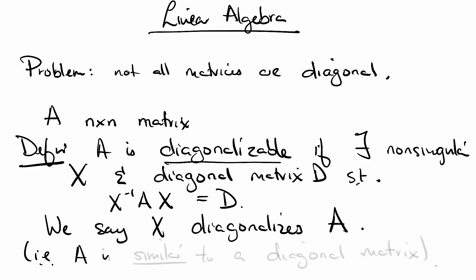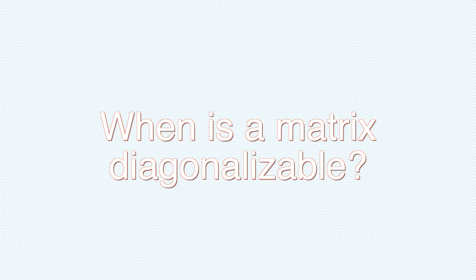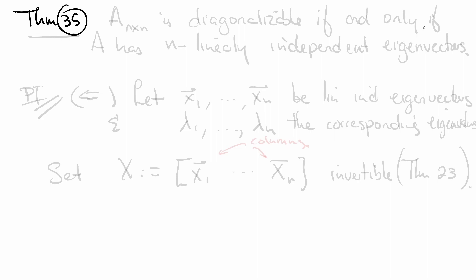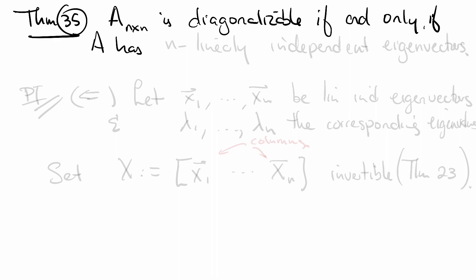Said otherwise, A is similar to a diagonal matrix, if you remember what similar means. The trick, of course, is knowing when a matrix is diagonalizable. Let's shed some light on this. Theorem 35: A, an n-by-n matrix, is diagonalizable if and only if A has n linearly independent eigenvectors.